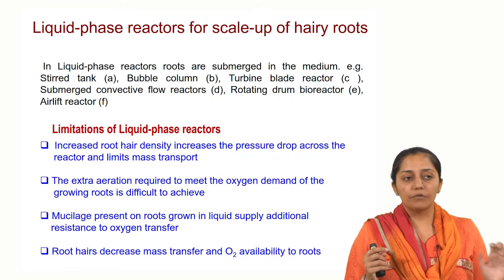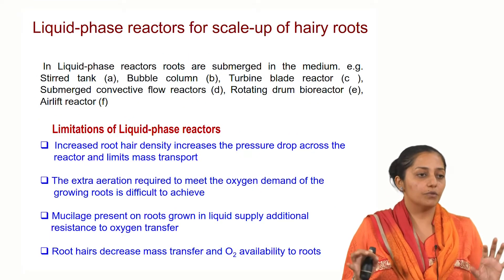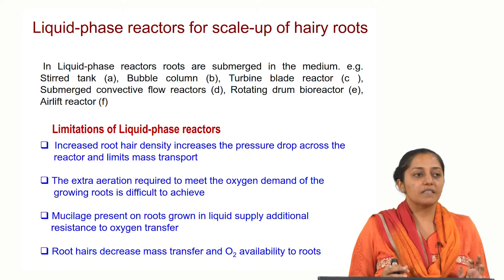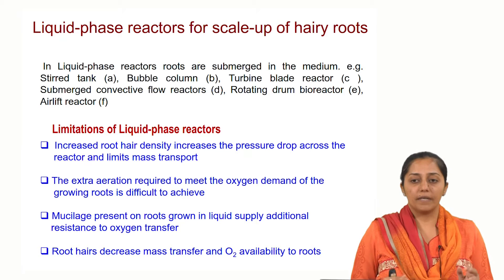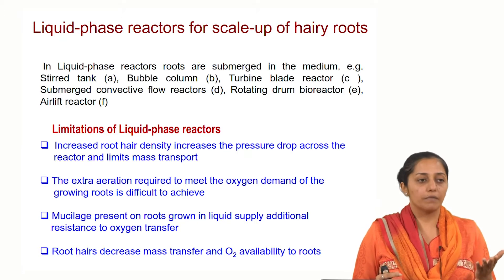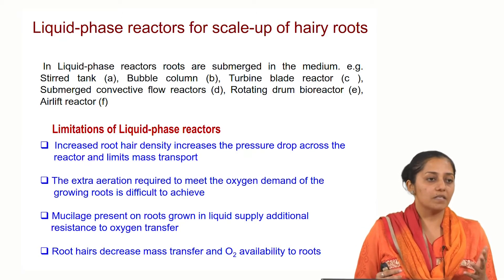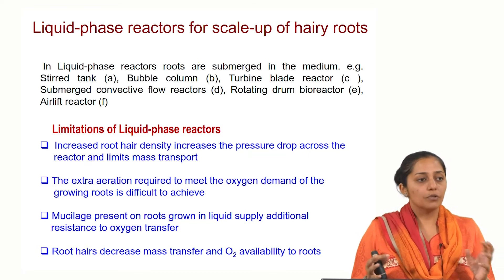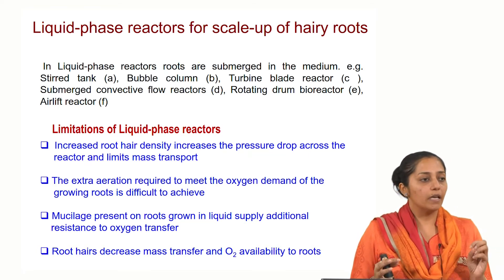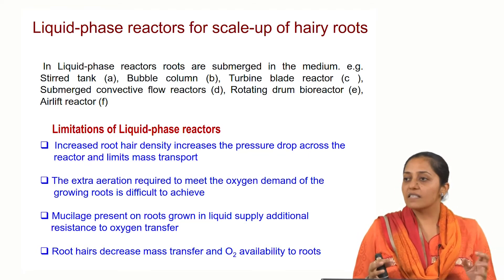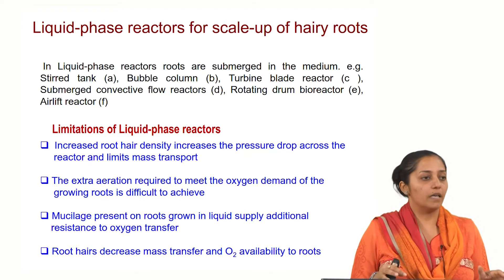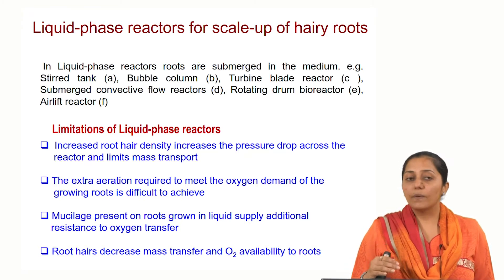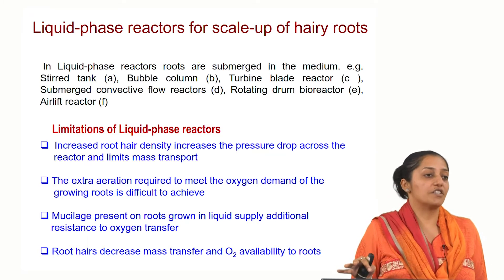The reactors for hairy root cultures are divided into two types: liquid phase reactors and gas phase reactors. Liquid phase reactors are generally the kind of reactors used in microbial or plant cell fermentations. In liquid phase reactors, gas is the dispersed medium in the liquid. In gas phase reactors, liquid is the dispersed medium in the gaseous environment.